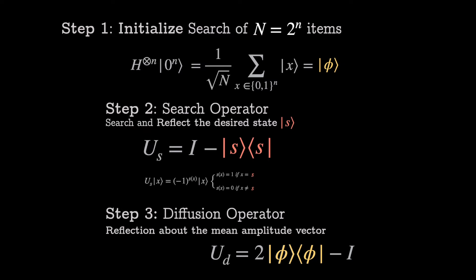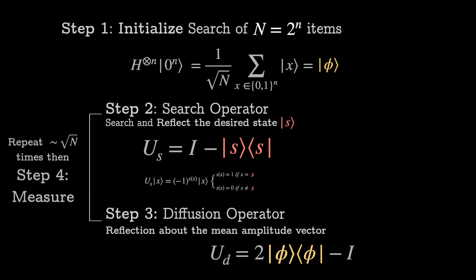And the third step is a reflection of our state vector about the mean amplitude, the diffusion operator, as it is called. This means if a state, one of our ket x's, has an amplitude greater than the mean, it will now be less. And if it was less, it would now be larger than the mean, and we can call this an amplification. We can repeat these two steps around square root n amount of times before the quantum state is measured, and we will have a high likelihood of observing ket s, the state we desire to measure.